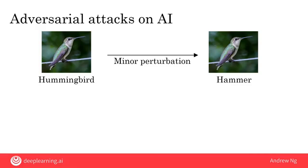In computer security, an attack against a secure system means an attempt to make it do something other than what it was intended to do. In the same way, an adversarial attack on an AI system is an attempt to make it do something other than what it was intended to do, such as trying to fool it into outputting incorrect classifications.